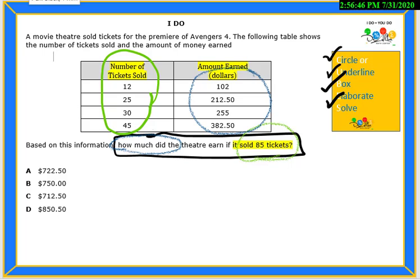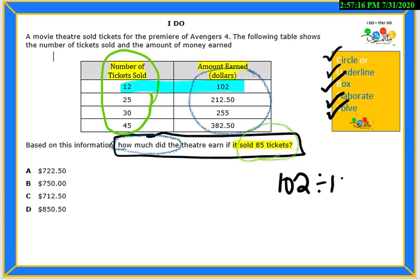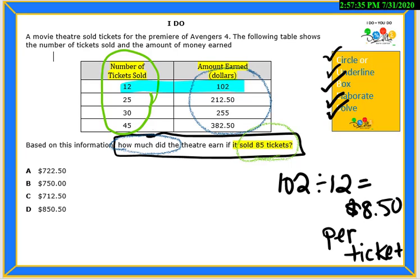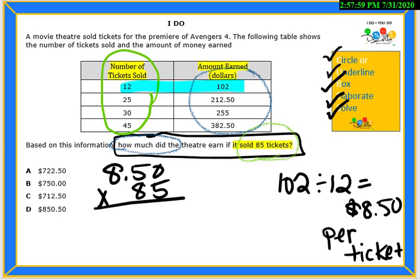Our final step is to solve the problem. I'm looking for how much is earned if they sold 85 tickets. Since we have the ratio table already, what we need to do is find the cost of one ticket. We can divide 102 by 12 — 102 divided by 12 equals $8.50 per ticket. Since we know that the cost of one ticket is $8.50, we can multiply 85 tickets times $8.50. When we multiply $8.50 times 85, we end up with $722.50.